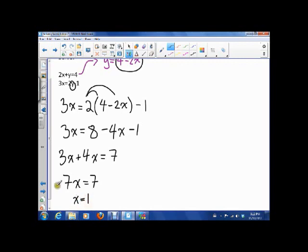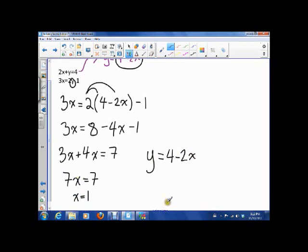Now I can take this, sub it into that equation right there. So we remember that y is 4 minus 2x, that's what we said at the beginning. And x is 1, so that means y is 4 minus 2 times 1, which is 2.